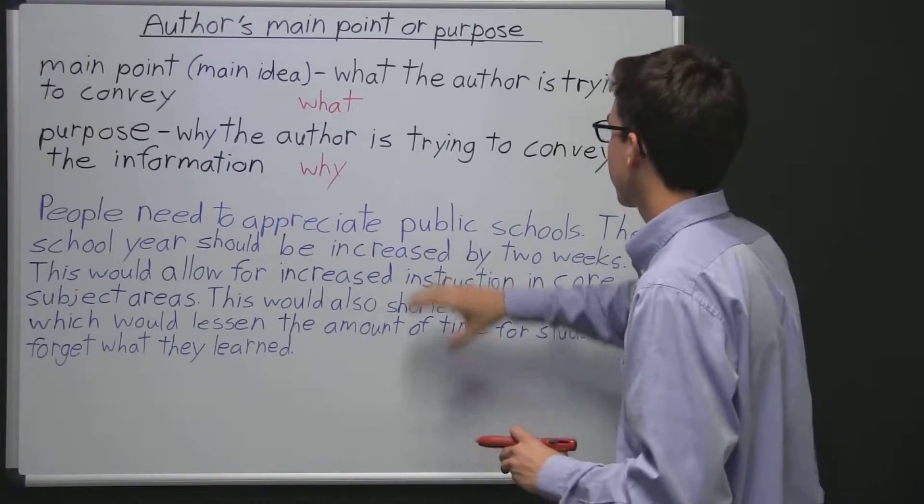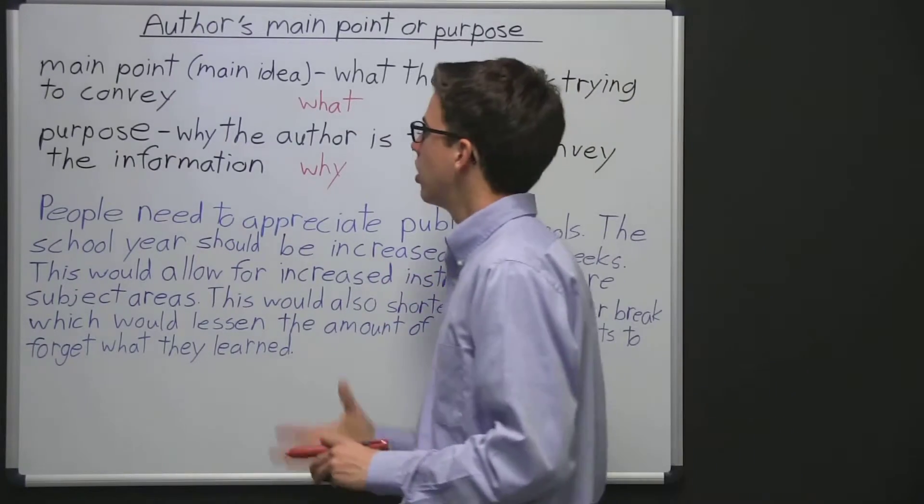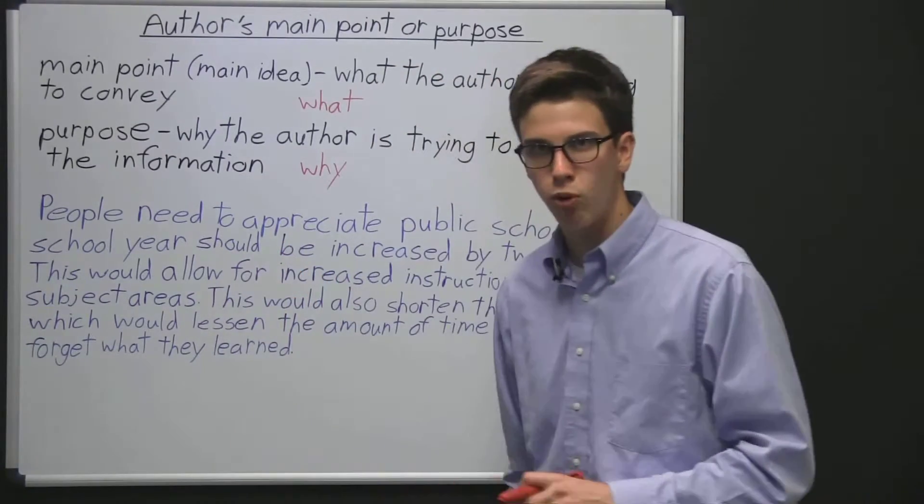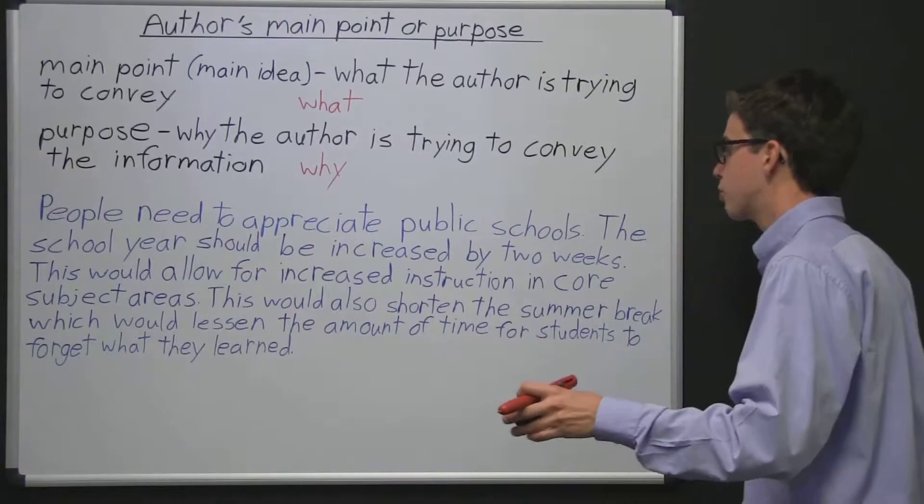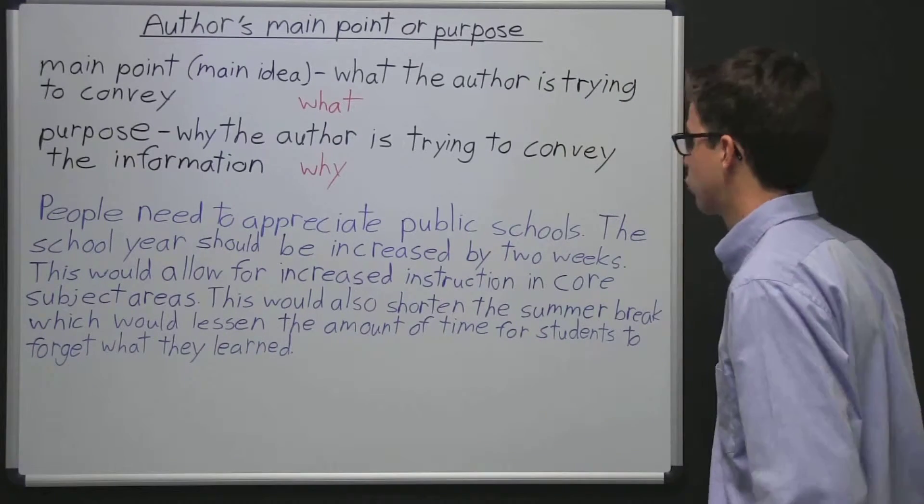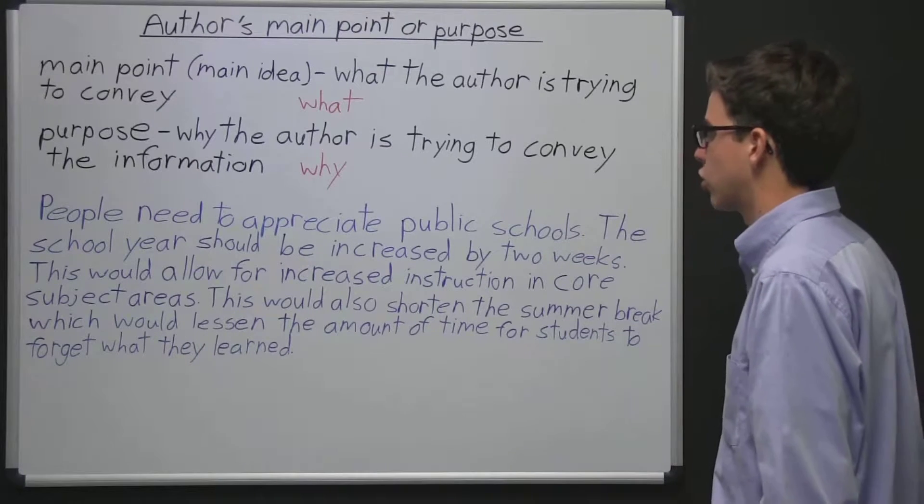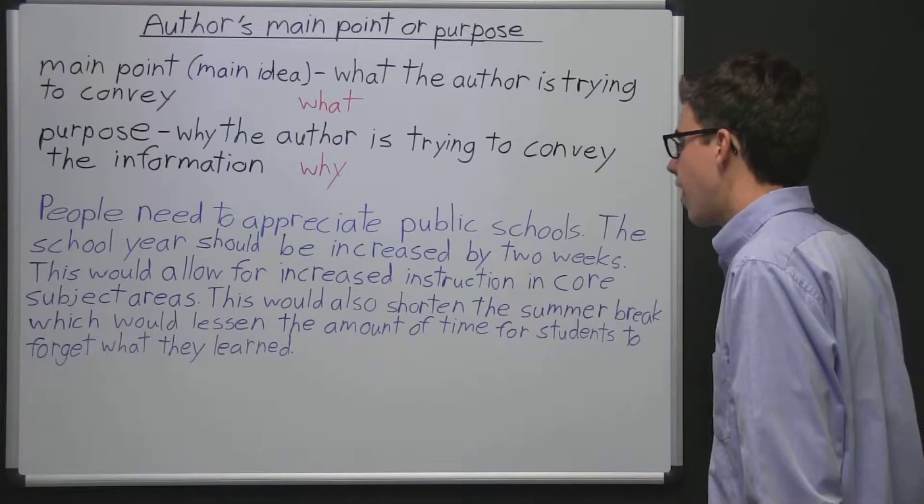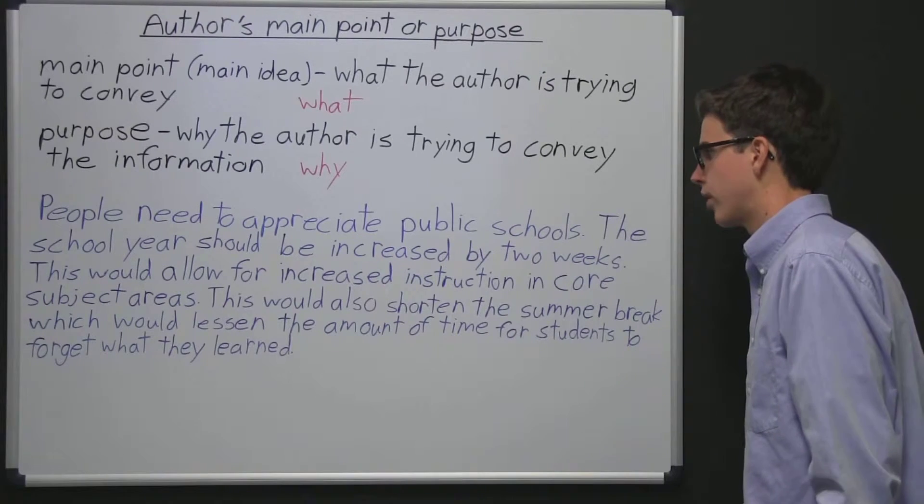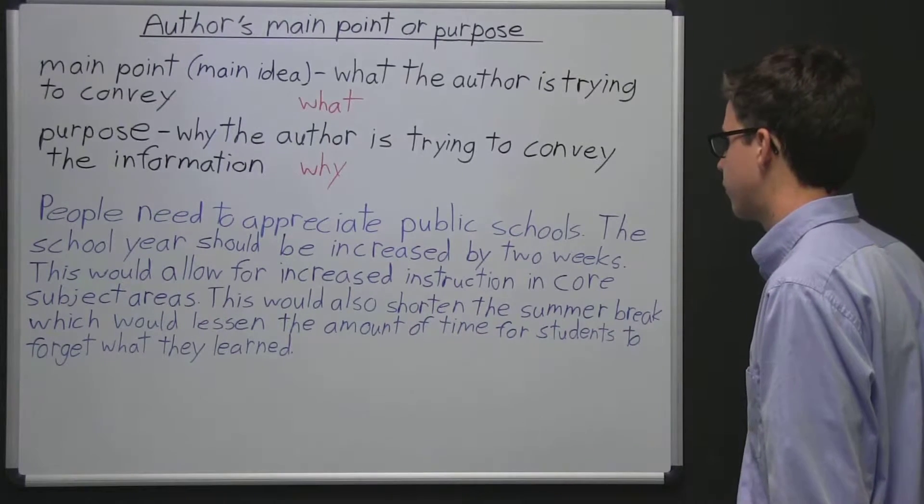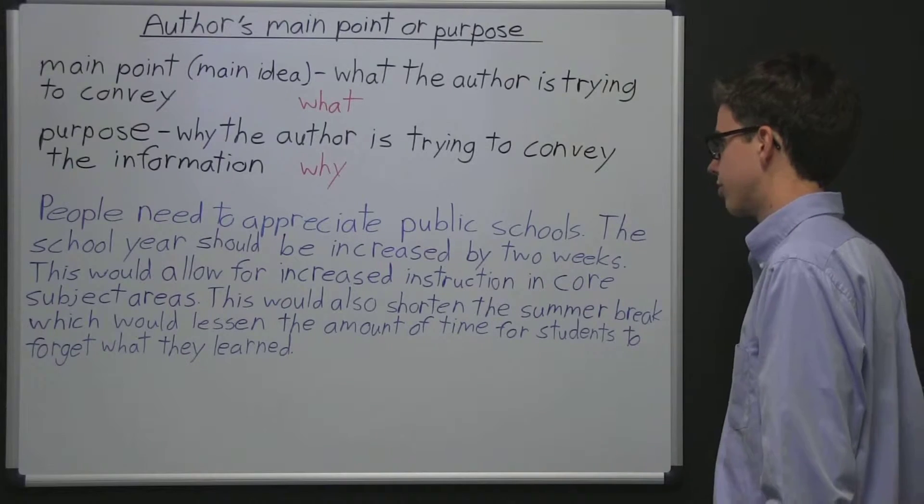So we have a passage right here and we're not going to look for the purpose in this main passage. We're just going to look at the author's main point. So this says people need to appreciate public schools. The school year should be increased by two weeks. This would allow for increased instruction in core subject areas. This would also shorten the summer break, which would lessen the amount of time for students to forget what they learned.